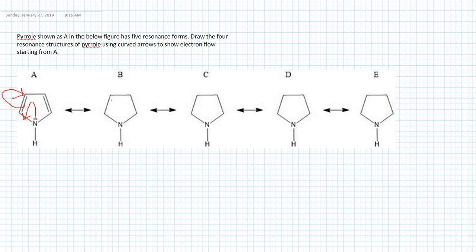Starting from A, we use this lone pair to make a pi bond, and we use this pi bond to make lone pair electrons. The resulting structure should have a lone pair here and a pi bond between nitrogen and that carbon. This nitrogen has to be positively charged, and the pi bond we didn't touch stays as an original pi bond here.